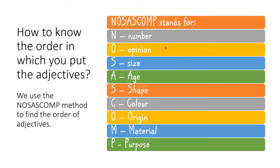NoSASCOM stands for: N - number, O - opinion, S - size, A - age, S - shape, C - color, O - origin, M - material, and P - purpose. As you can see, there are two O's and two S's. We have to remember that the first O is for opinion and the first S is for size, while the second O is for origin and the second S is for shape.